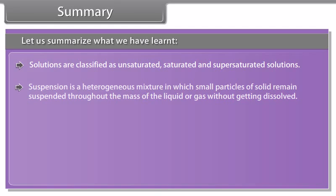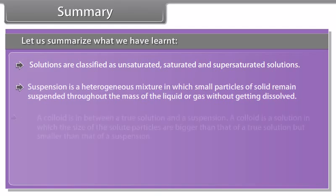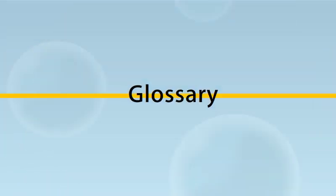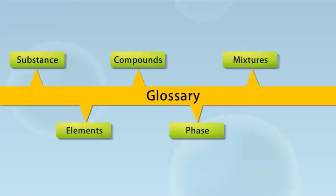Crystallization: A hot solution of a substance on cooling deposits crystals of the pure substance; this process is called crystallization. Activity: Take about 100 ml of water in a beaker, acidify with a few drops of dilute sulfuric acid, and heat. When it starts boiling, add copper sulfate powder slowly with continuous stirring until a saturated solution is obtained. Filter the solution and allow it to cool. After some time, you will see blue colored shining crystals of copper sulfate in the solution.